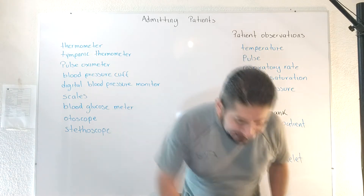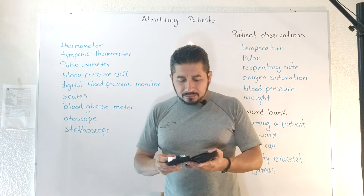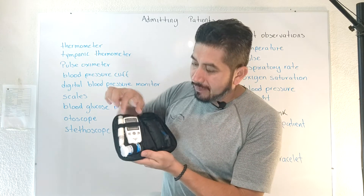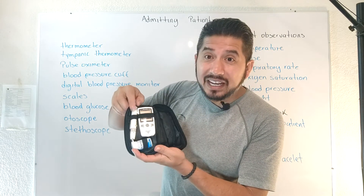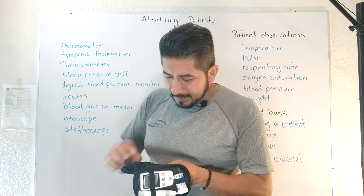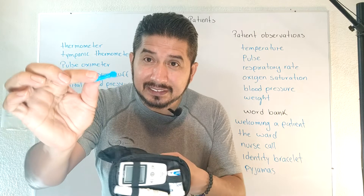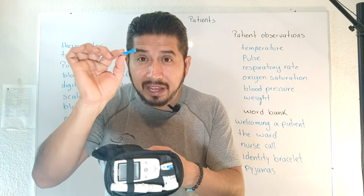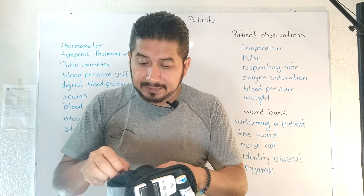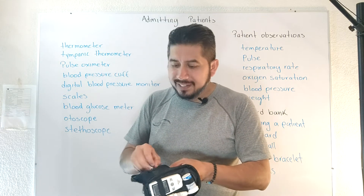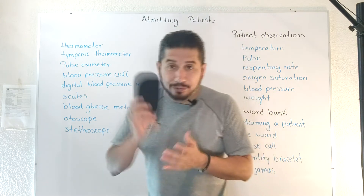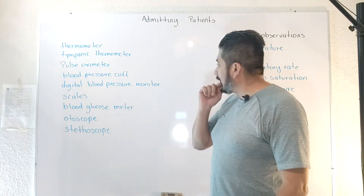And then we have the blood glucose meter. I think it's this one — yes. So we have the blood glucose meter, the lancing device, the test containers, and the lancets. I think it's very common for people to have one at home to check their glucose. That's very important, even for us, to be checking our glucose levels.